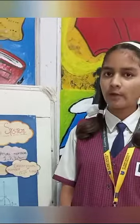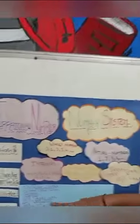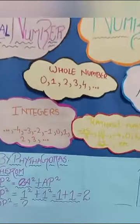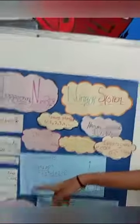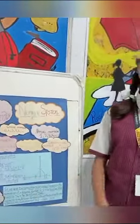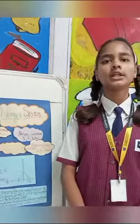By the Pythagoras theorem: OB squared is equal to OS squared plus AP squared, which is 1 squared plus 1 squared, equal to 2. Therefore OB is equal to square root of 2.